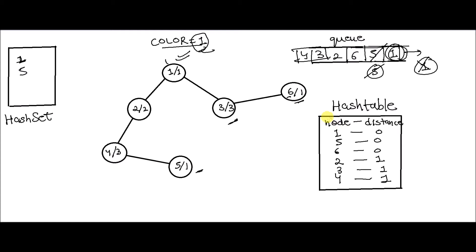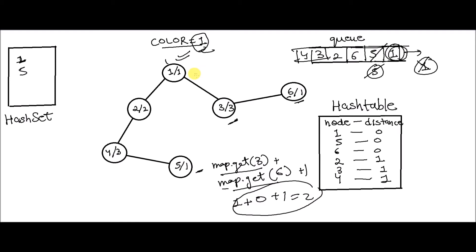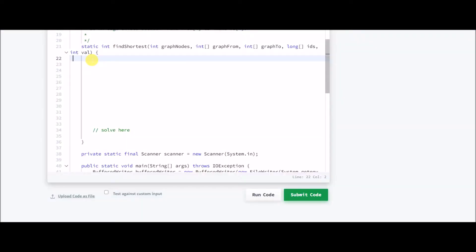That was the main concept. The answer to this problem will be: map.get(distance of 3) + map.get(distance of 6) + 1. The distance of 3 was 1, plus the distance of 6 was 0, plus 1 — the answer is 2. The first branch that gets connected is guaranteed to have the shortest distance. I hope that's clear, so let's code it now.